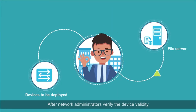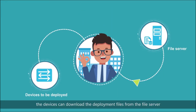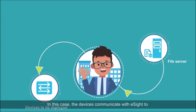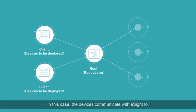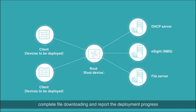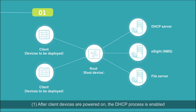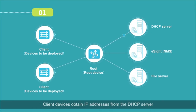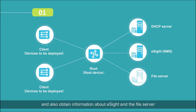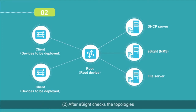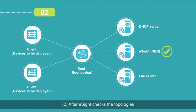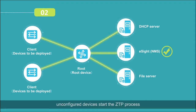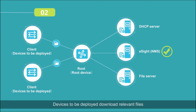After network administrators verify the device validity, the devices can download the deployment files from the file server. The devices communicate with eSight to complete file downloading and report the deployment progress. After client devices are powered on, the DHCP process is enabled. Client devices obtain IP addresses from the DHCP server and also obtain information about eSight and the file server. After eSight checks the topologies, unconfigured devices start the ZTP process. Devices to be deployed download relevant files and restart to complete activation.